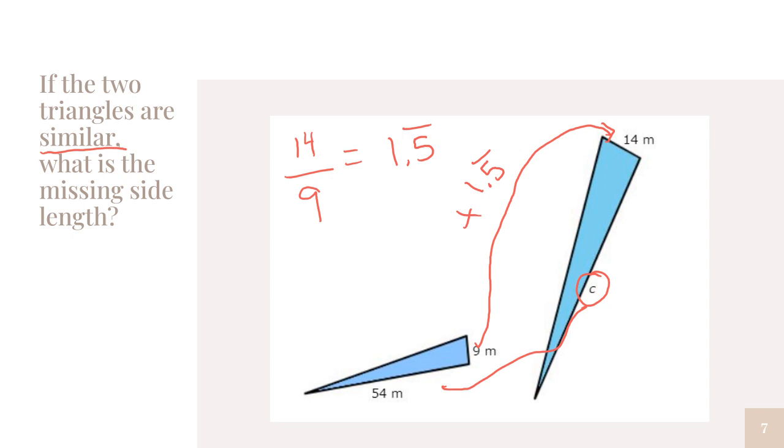If I multiply nine by 1.5, it gives me 14. Now I need to do the same thing to 54. I'm going to multiply 54 times 1.5 repeated. I keep that 1.55555555 in my calculator, then multiply that by 54. When I do 54 times 1.5 repeated, that gives me 84. So C equals 84, my missing side length.